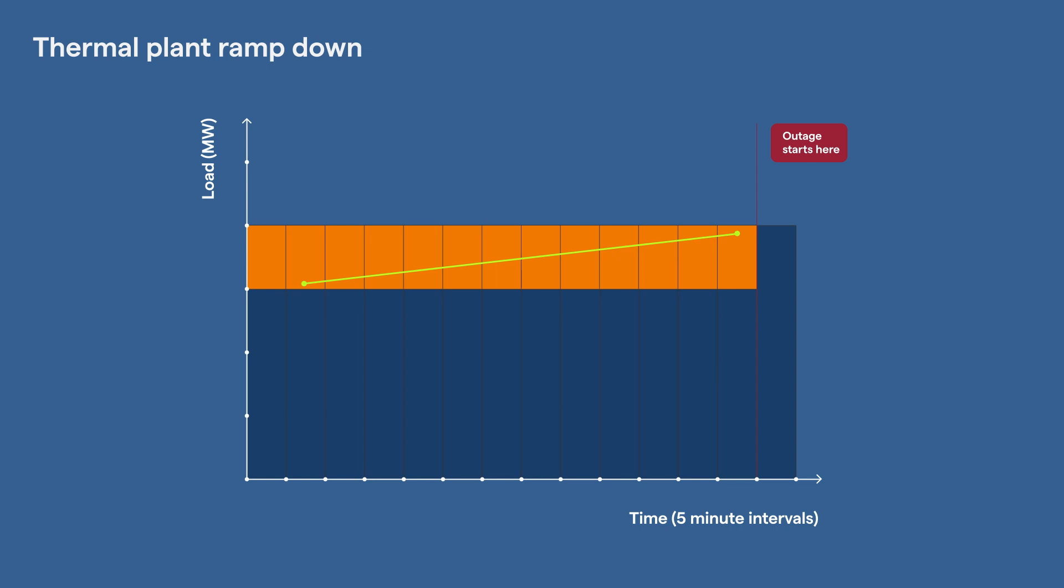To achieve the megawatts required for the outage, the system coordinator applies a discretionary constraint in the market to start dispatching down the slow ramping generation before the outage starts. The plant is ramp rate constrained and ramps down slowly, requiring dispatch every five minutes. The slow ramping generation reaches the required level of dispatch for the outage to start on time.